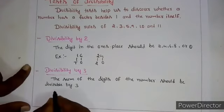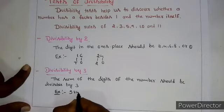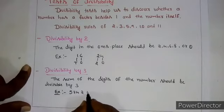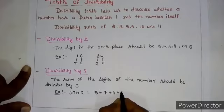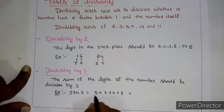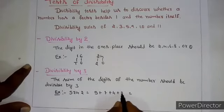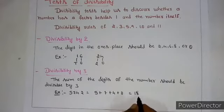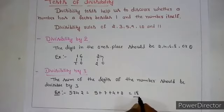For example, take 5742. When we add all these digits: 5 plus 7 plus 4 plus 2. 5 plus 7 is 12, 12 plus 4 is 16, 16 plus 2 is 18. 18 is divisible by 3, since 3 times 6 equals 18. So 5742 is divisible by 3.